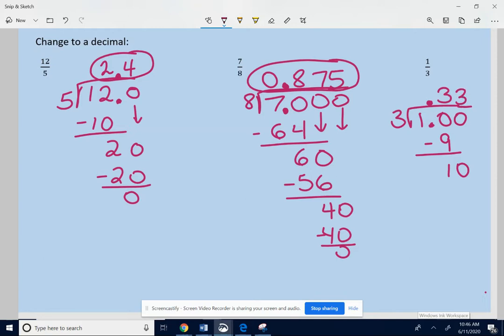3 into 10 again. Goes 3 times. 3 times 3 is 9. Subtract. 1. Bring the 0 down. 3 into 10, 3 times. You guys see the pattern?